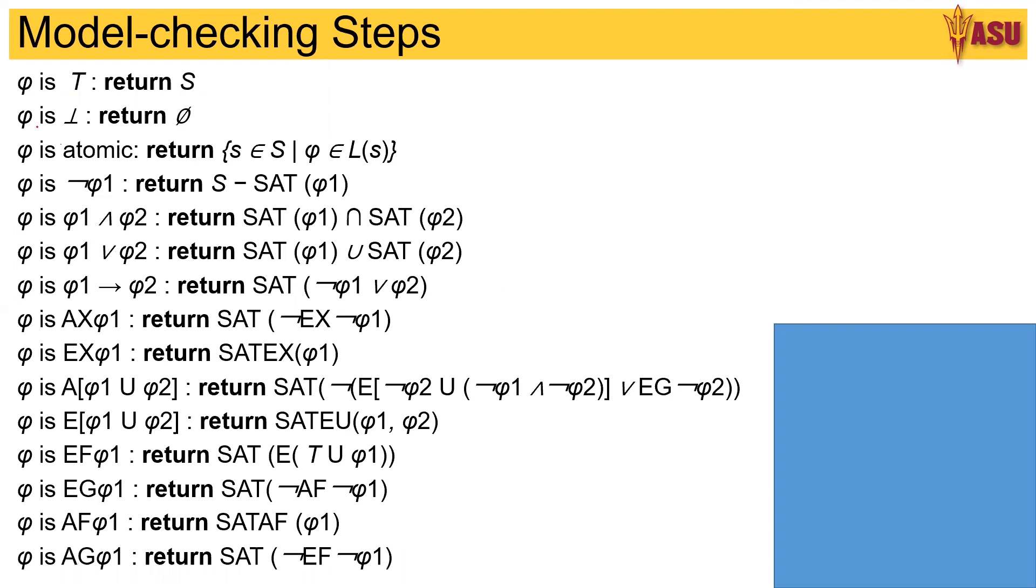It says something like, if the formula φ is true, then return the set S. If it's false, return ∅. If φ is atomic, return the set S, include S into the set and return the set.